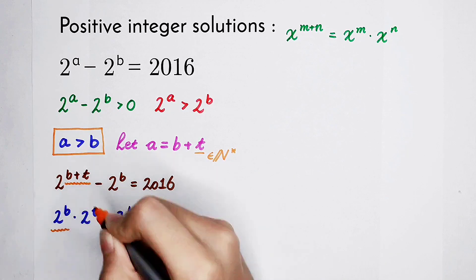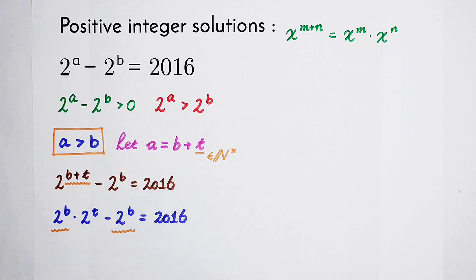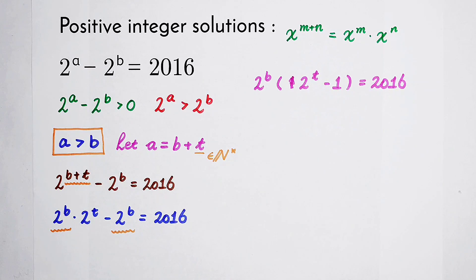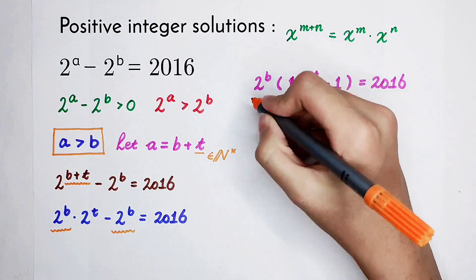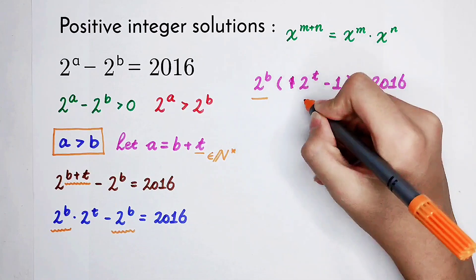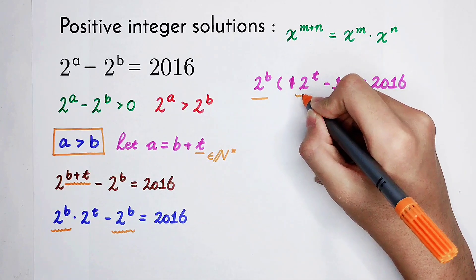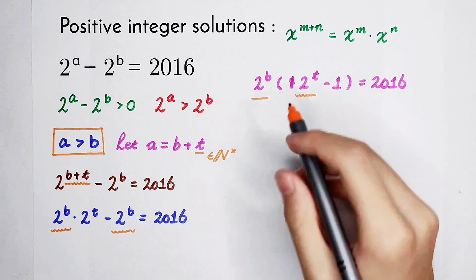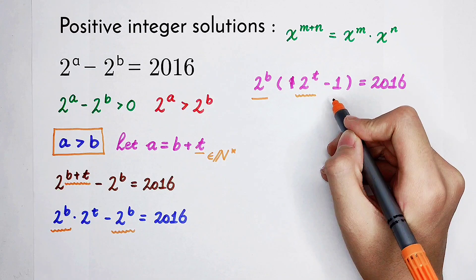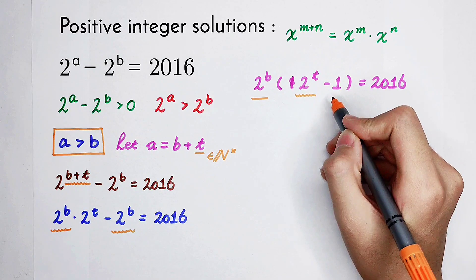We see that 2 to the power of B appears twice, so we factor it out. Because B and T are both positive integers, 2 to the power of B and 2 to the power of T are both positive integers, and 2 to the power of T minus 1 is also a positive integer.